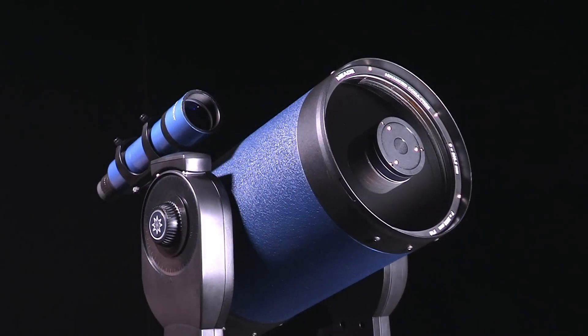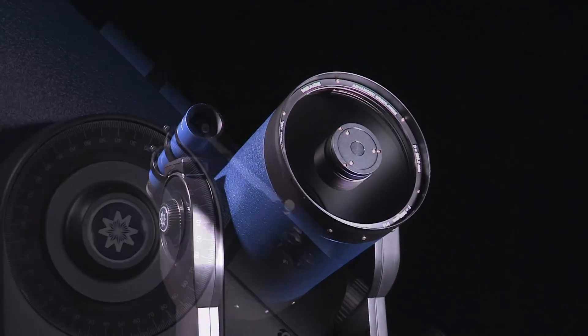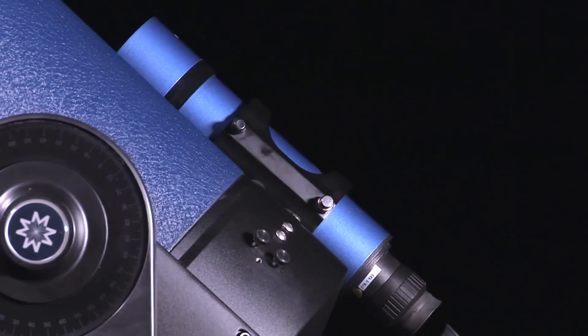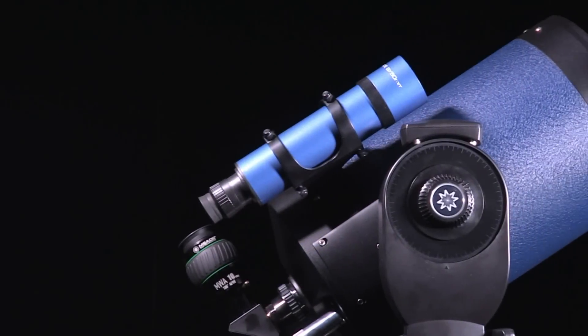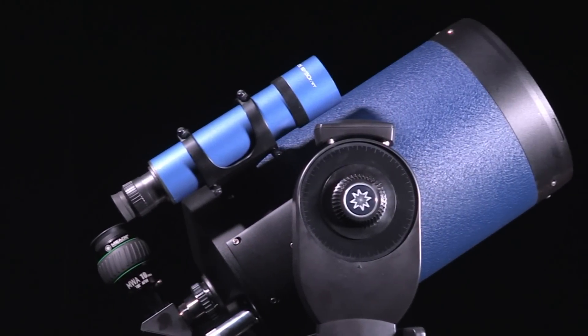The LX90 series telescope is one of the easiest scopes to use. It comes in three different sizes, weighing only 52 pounds for the 8-inch, 69 pounds for the 10-inch, and 79 pounds for the 12-inch.